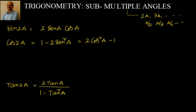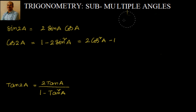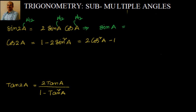Now when will a become a/2? When you divide — wherever a is there, you substitute a by 2 and you will be getting it. So if I make this a as a/2, you remember earlier we made b equal to a and applied the formula. Now we are applying a/2. So 2 into a/2 is a. So sin a is equal to 2 sin(a/2) cos(a/2).